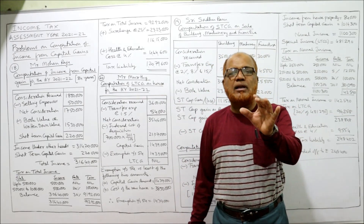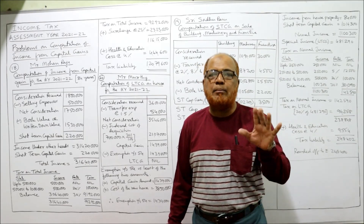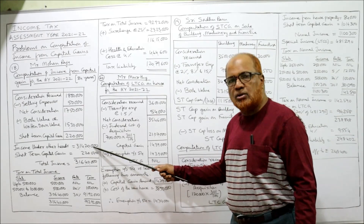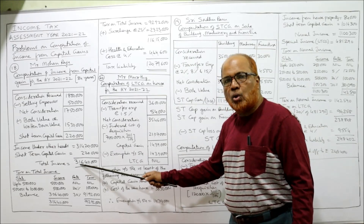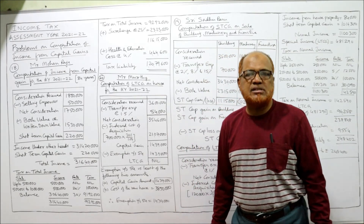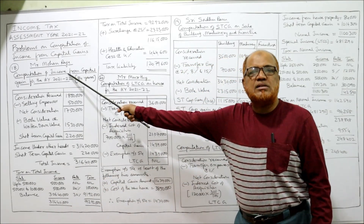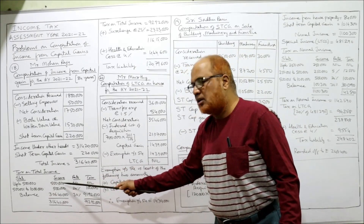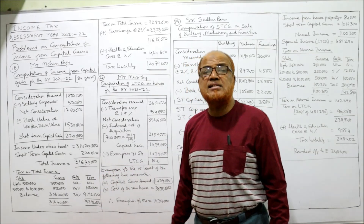Since this is a short-term capital gain, income under other heads is 3 crore 14 lakh 20 thousand, and short-term capital gain is 2 lakh 20 thousand, so total income comes to 3 crore 16 lakh 40 thousand. On this, we apply the slab system. Tax on total income: the assessee is a super senior citizen, so the basic exemption limit is 5 lakh. Up to 5 lakh rupees, the tax rate is nil — no tax for the first 5 lakh.